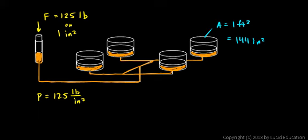And there's four of those. So over on the right side, the cylinders being lifted up, the total area is 144 square inches times four, which works out to 576 square inches, as opposed to one square inch on the other side.